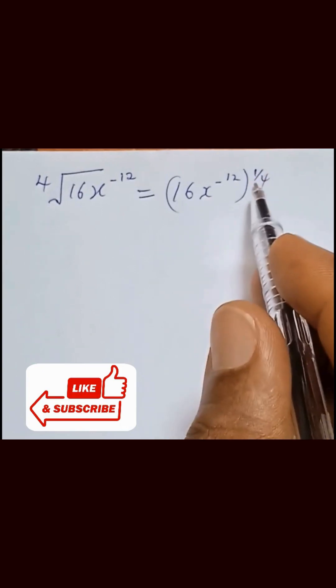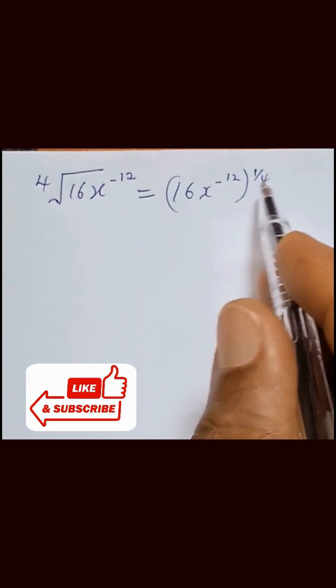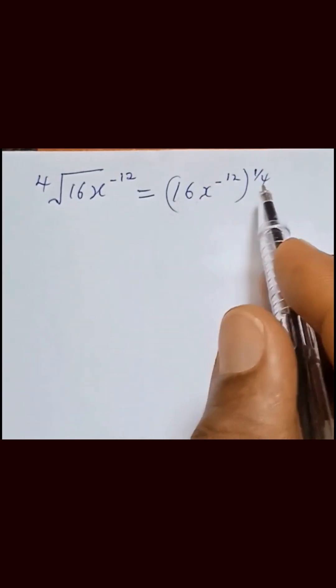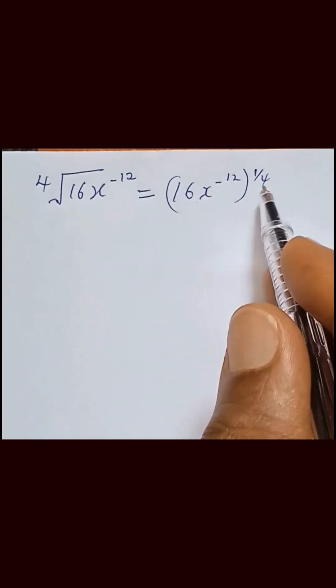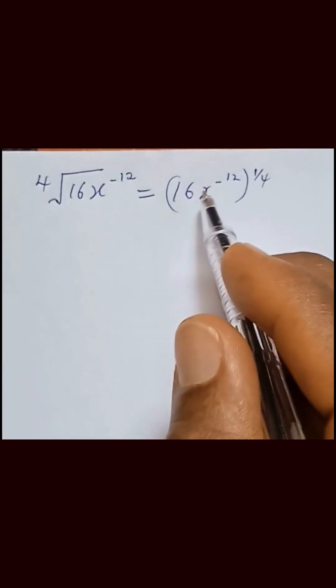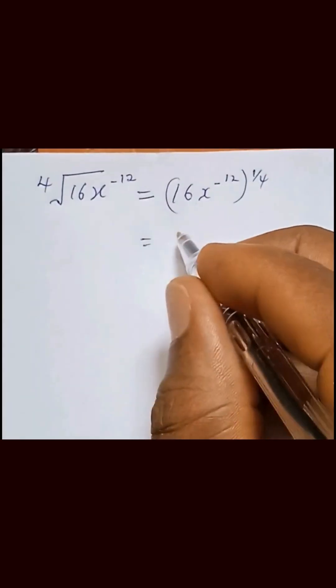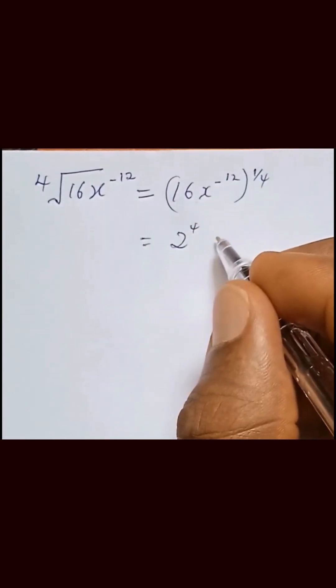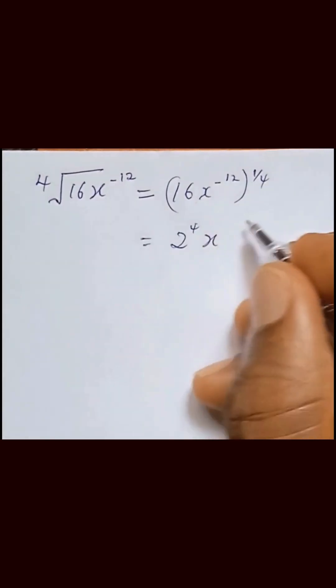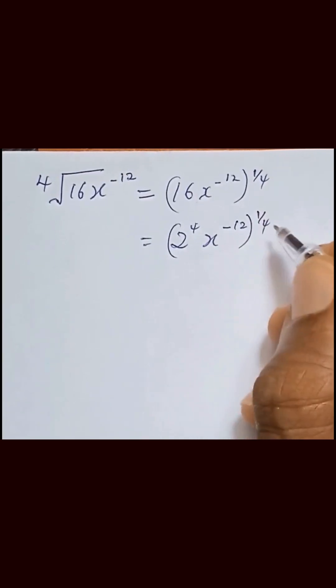So we multiply this by the bracket, and before that we simplify what we have in the bracket. So firstly, let's simplify what we have in the bracket and that will be equal to 2 raised to the power 4, x raised to the power minus 12, all raised to the power 1 over 4.